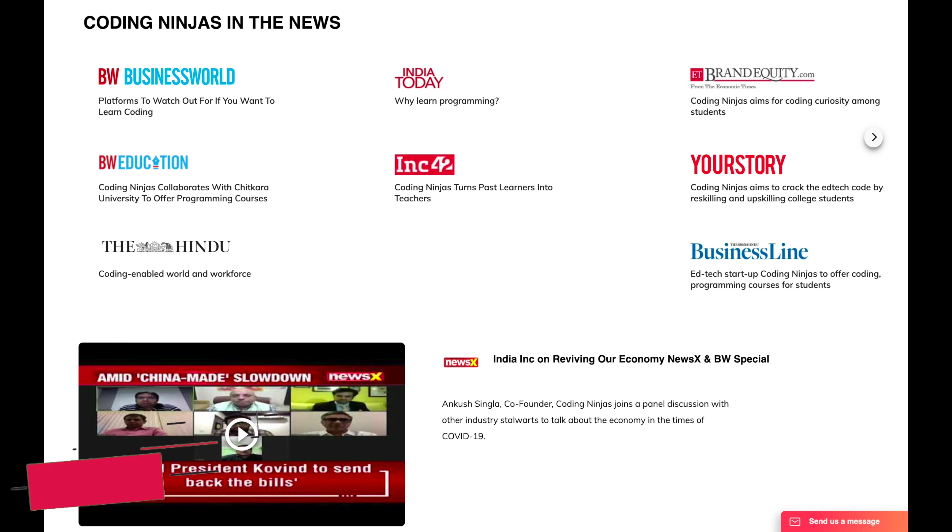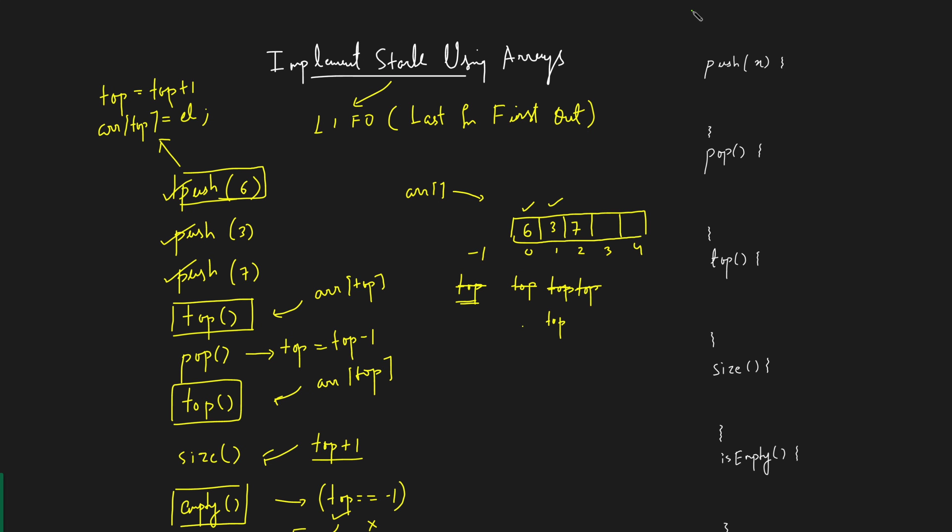So can I say if there are these functions initially I can declare the array to be of the largest size. Like over here our largest size was 5 so we will declare it. And can I say we'll declare it top variable to be minus 1, that's the initial declaration.